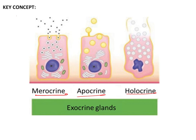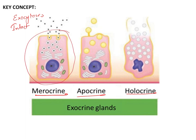In merocrine secretion, the process is by exocytosis. The whole cell remains intact, and vacuoles containing the secretory material come out through the process of exocytosis. So the secretory material exits via exocytosis but the whole cell is intact.